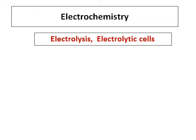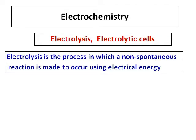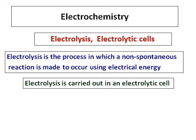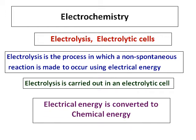Let's continue with the next topic on electrochemistry. We will be learning about electrolysis and electrolytic cells. Electrolysis is a process in which a non-spontaneous reaction is made to occur using electrical energy, and it is carried out in an electrolytic cell. In this case, electrical energy is converted into chemical energy.